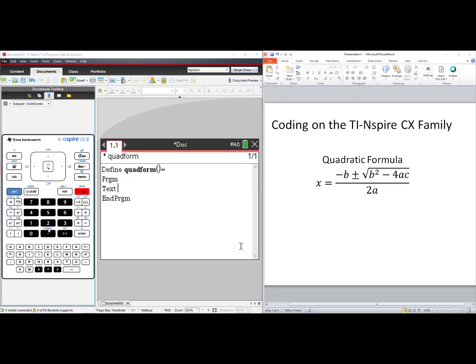Anything you put within quotes will now appear on the screen. Press Ctrl-Multiplication to get the quotes, and then type in: Enter A, B, and C from Ax² plus Bx plus C equals 0.